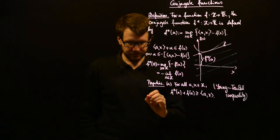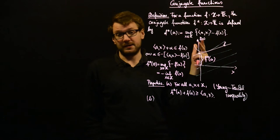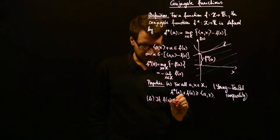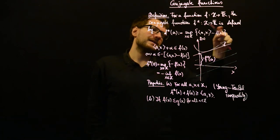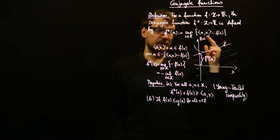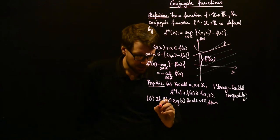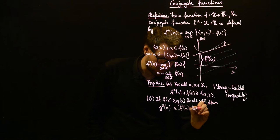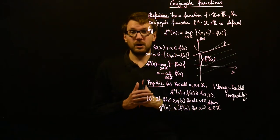An interesting property is what happens if you have two functions f and g, where f of x is less than or equal to g of x for all x in H. Then whenever you replace f with g, minus f of x is always greater than or equal to minus g of x, so the supremum becomes larger. This means g star of a will be less than or equal to f star of a for all a in H — the ordering is reversed by taking the conjugate.